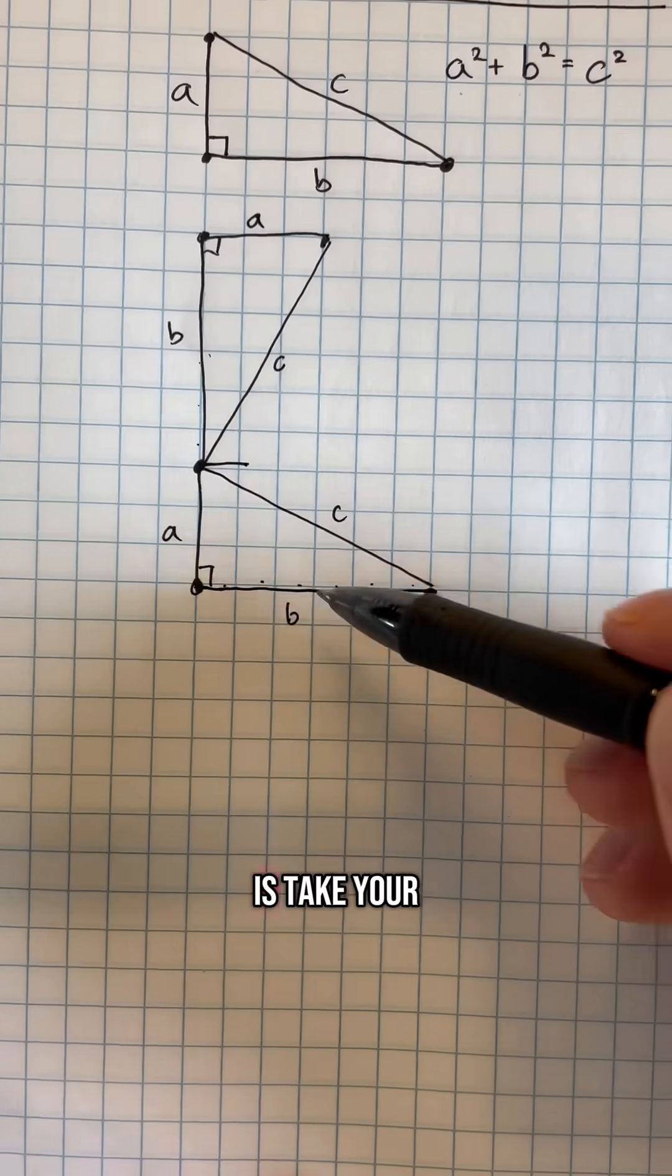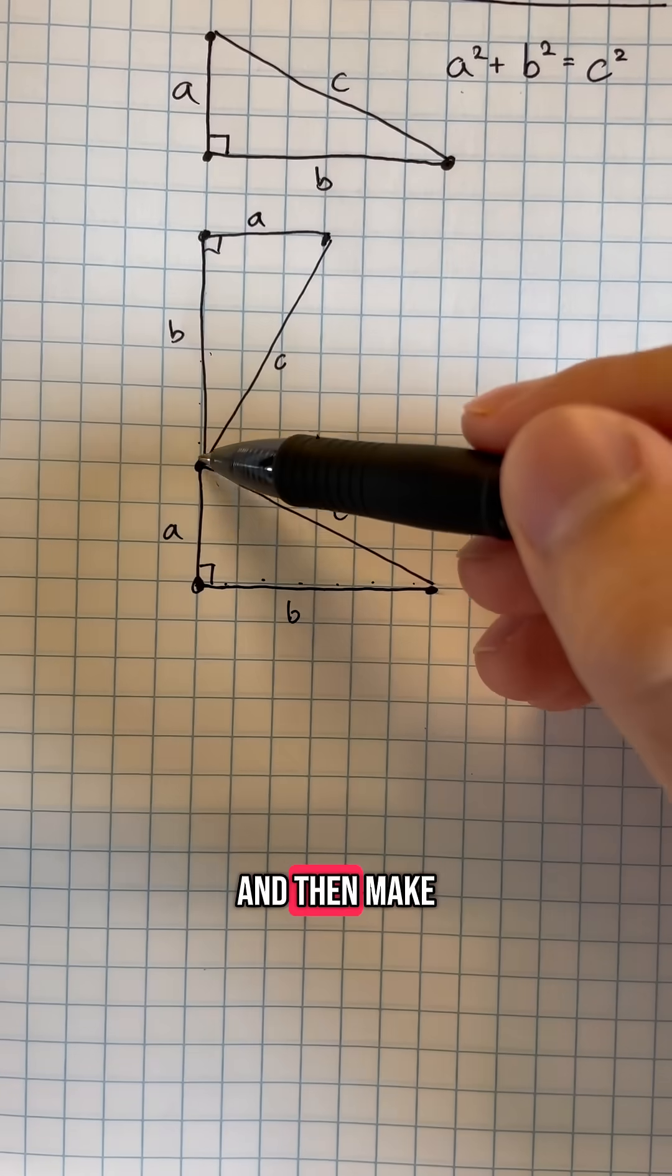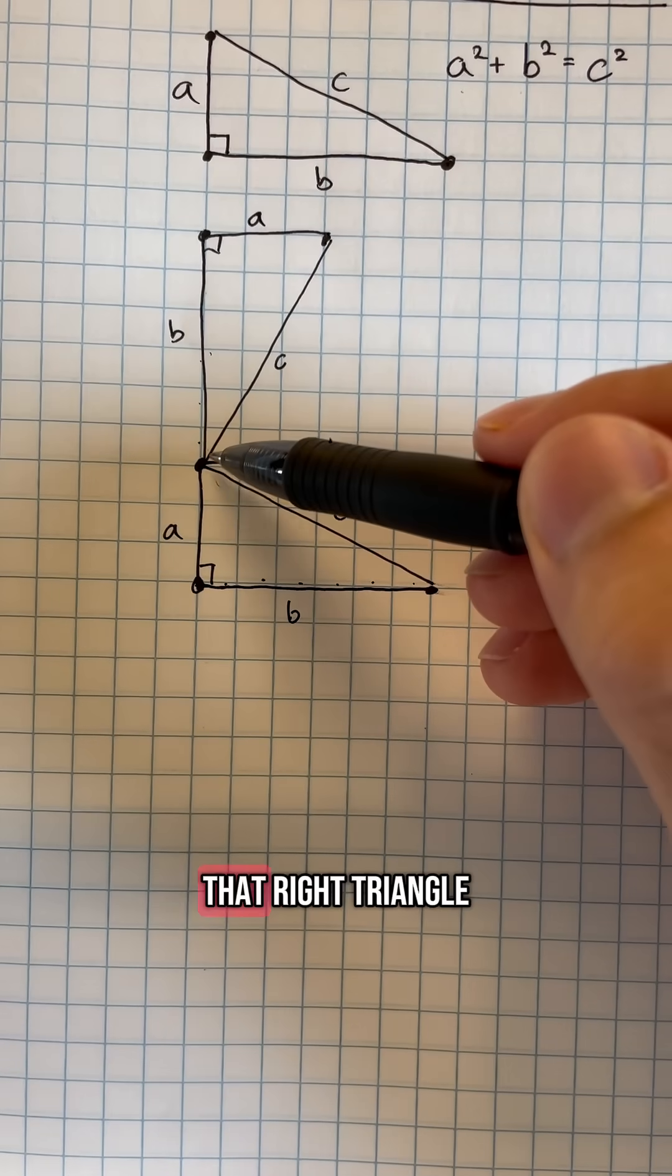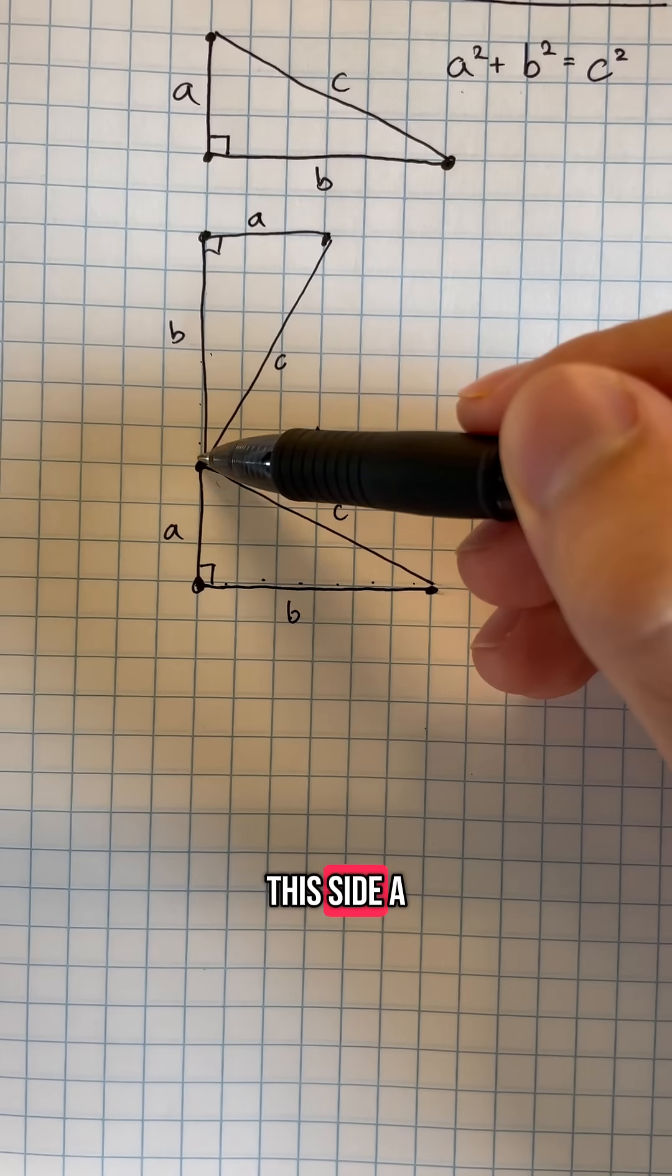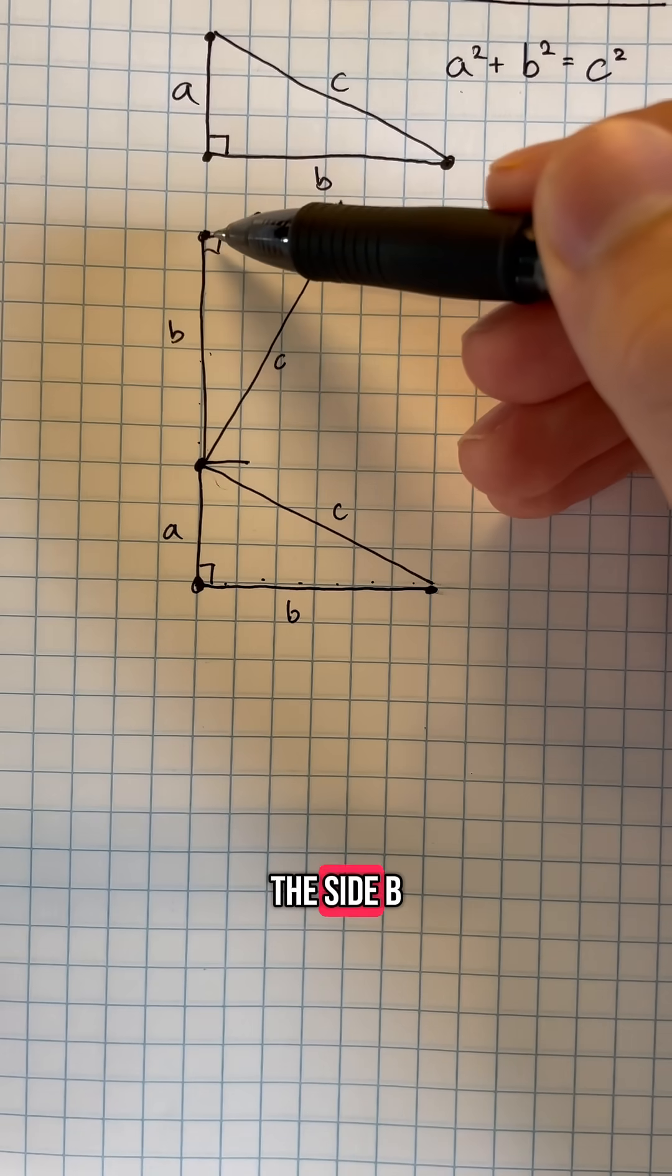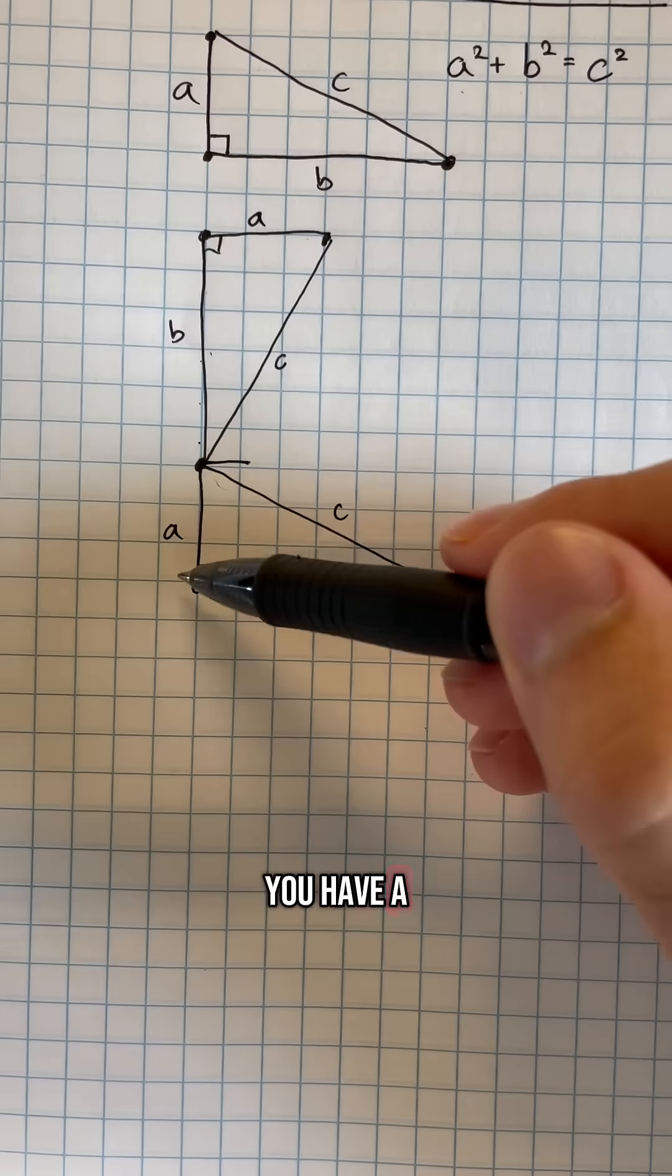The way he proved this is to take your right triangle and then make another copy of that right triangle in this formation. So you have this side a, and then this goes right into the side b, and then here you have a, and then here you have b.